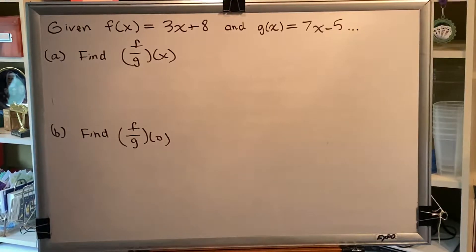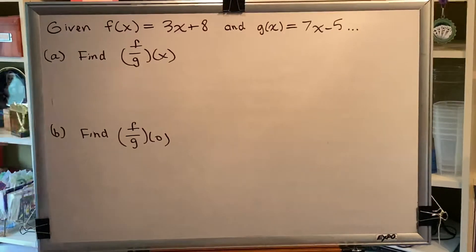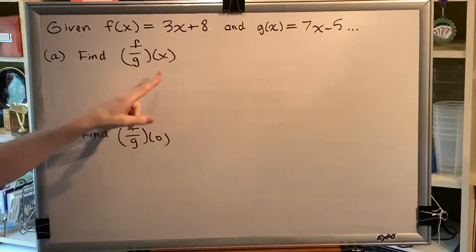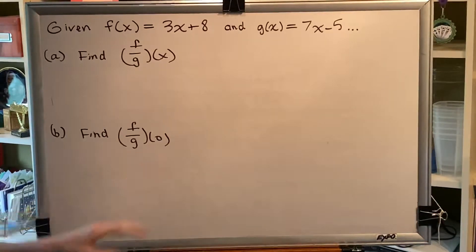Let's look at a problem. Given f(x) = 3x + 8 and g(x) = 7x - 5, part a find (f/g)(x). Part b find (f/g)(0).